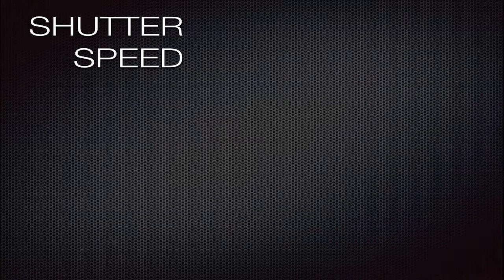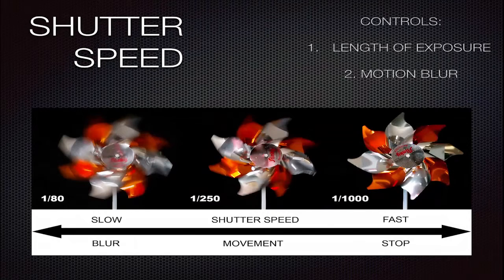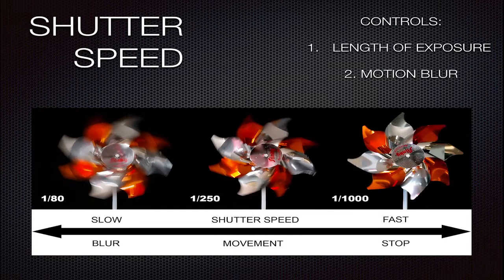The other aspect of the triangle is shutter speed. It controls the length of time the light is allowed to hit the sensor or the film plane, and it consequently affects the amount of blur. The slower the shutter speed, the more blur. The quicker the shutter speed, the less blur, as we can see in this image.